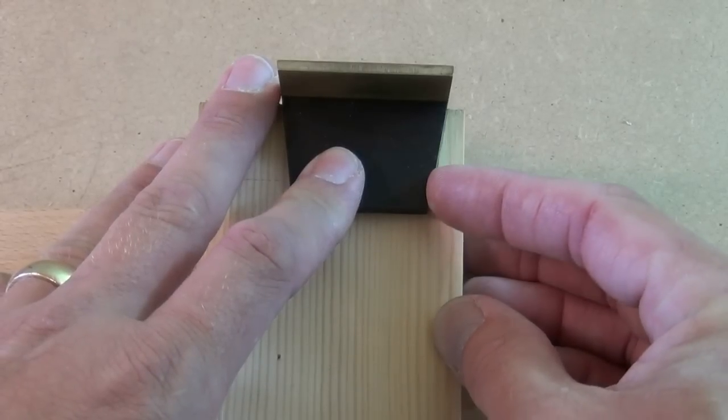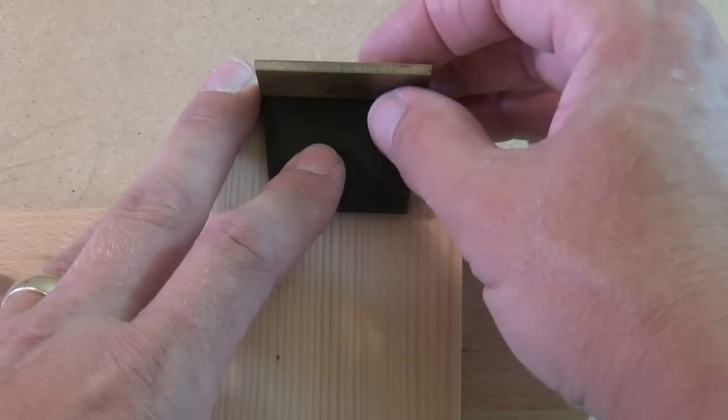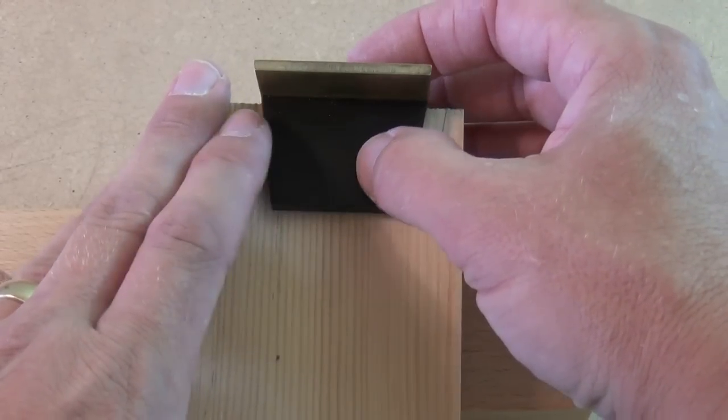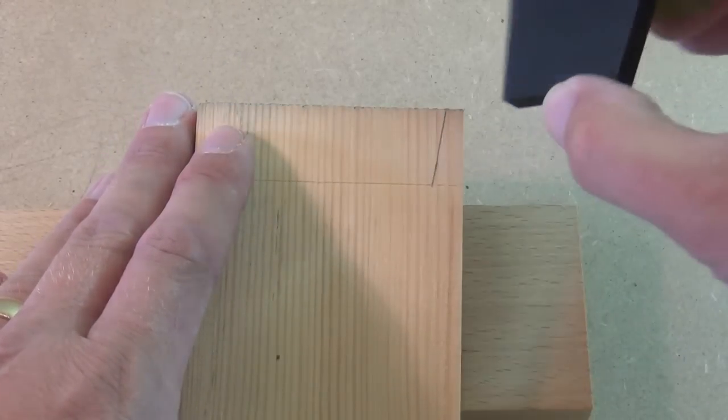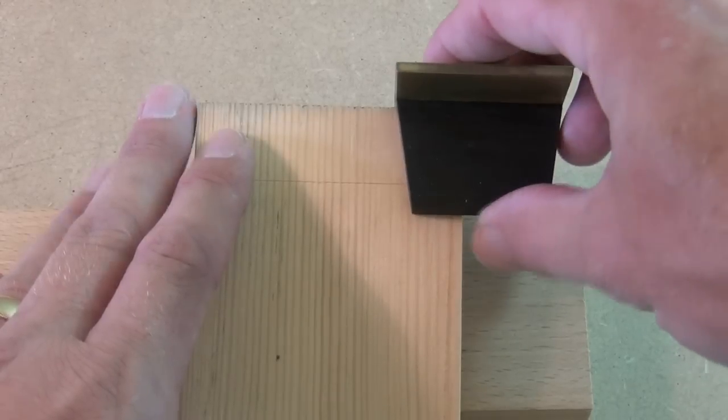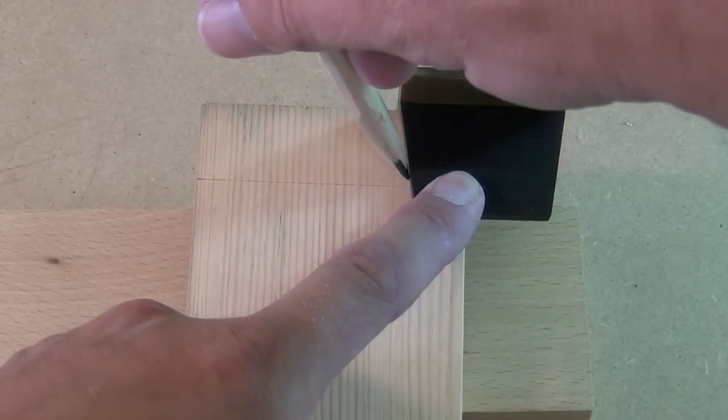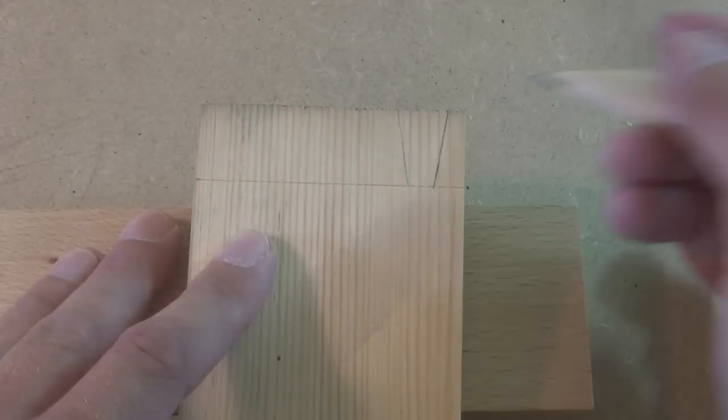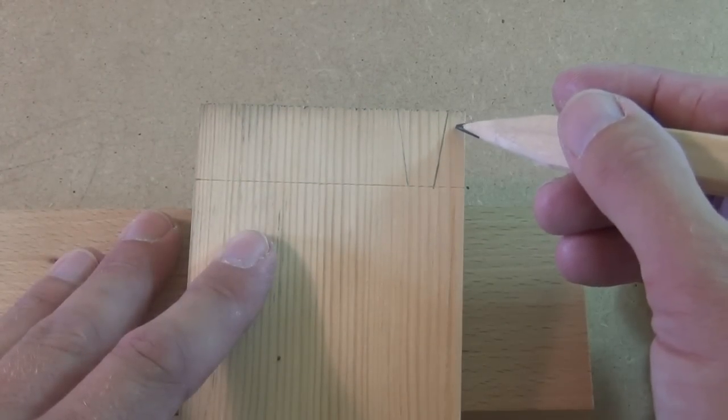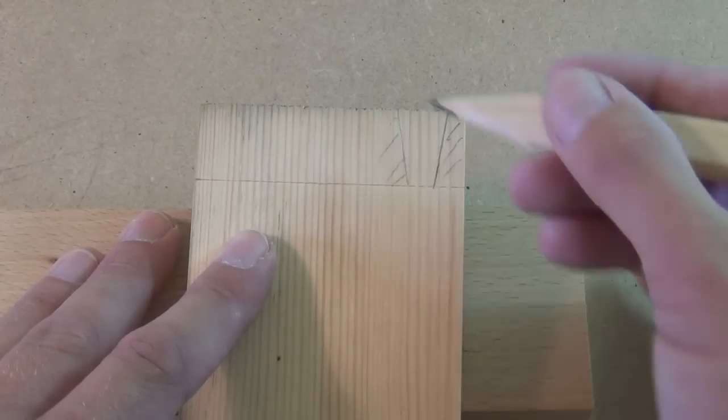When I mark my dovetails, I tend to use a sharp pencil. To mark the other side of that dovetail, we must remember to flip this over so we keep the same angle. And just mark our waste so we don't remove the wrong bit.